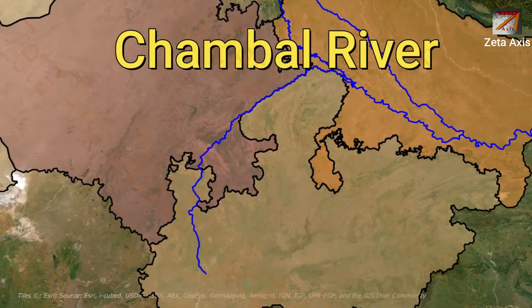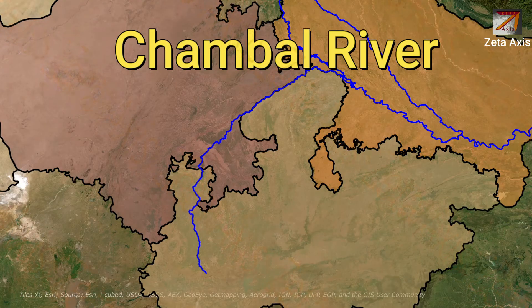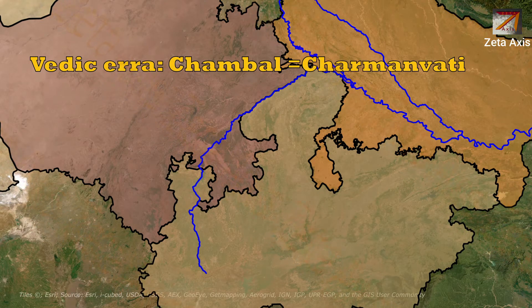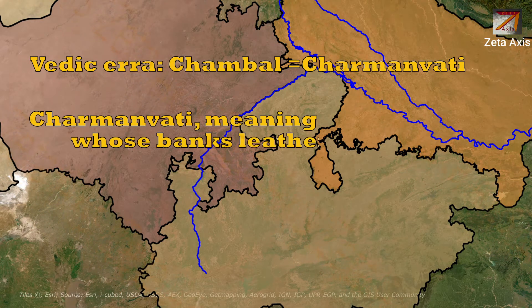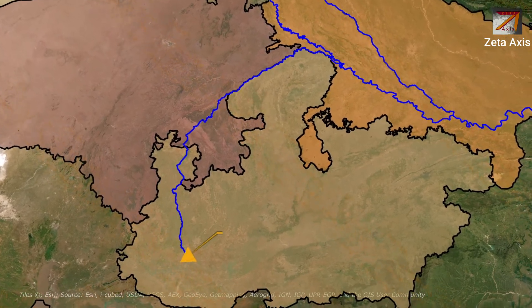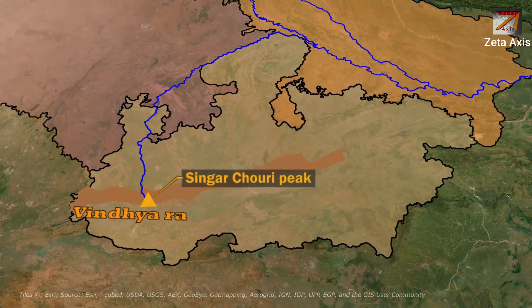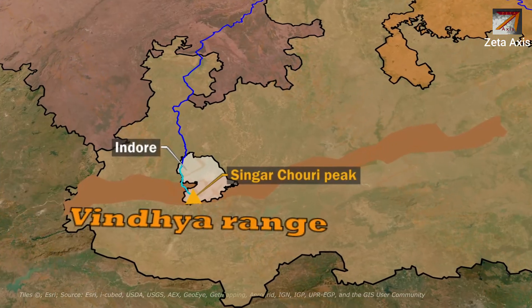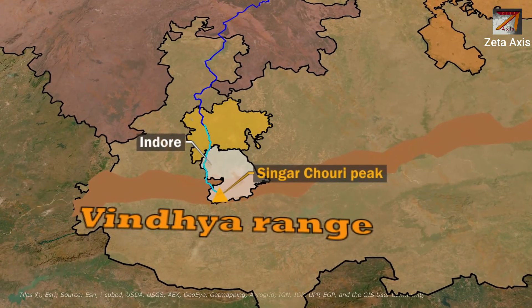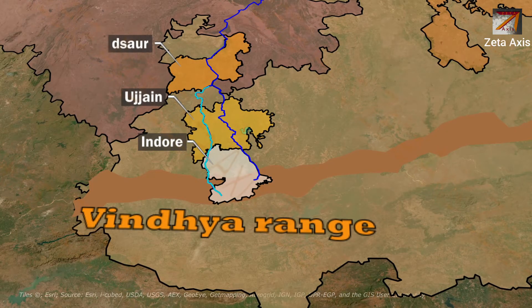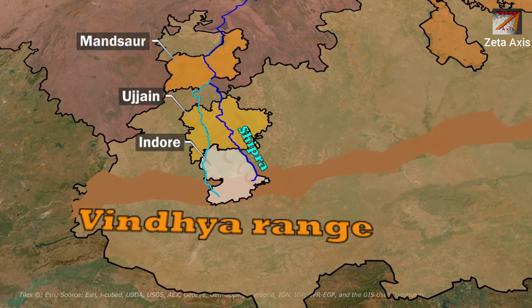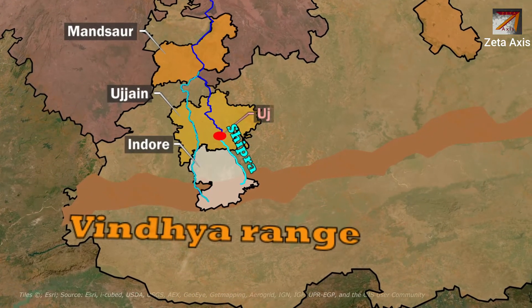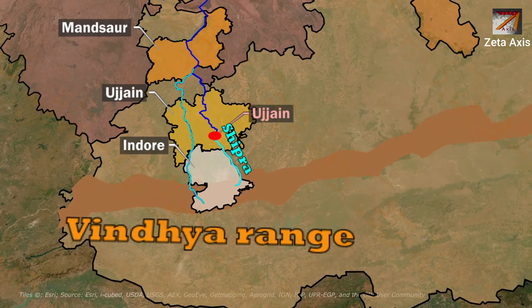Now let's discuss the Chambal river, one of the most important tributaries of the Yamuna river. During the Vedic era, the Chambal river was called Charmanwati, meaning 'the river on whose banks leather is dried.' The Chambal river originates from Singharchauri peak in the Vindhyachal range near Indore. From Indore district, it passes through Ujjain district and enters Mandsaur where it meets the Sipra river. The Sipra river also originates in Indore district from the Vindhyachal mountains, flows through Ujjain city, and Kumbh Mela is organized on its banks.